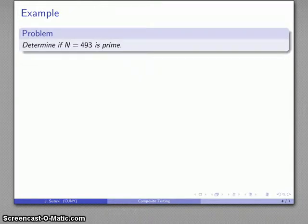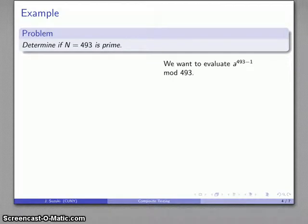Let's take a look at an example. So let's take the number N equals 493 and let's see if we can determine whether this number is prime. And again, what I could do is try trial division by everything less than 493, but let's evaluate the Euler-Fermat theorem and I'll evaluate a to the power 493 minus 1 mod 493.